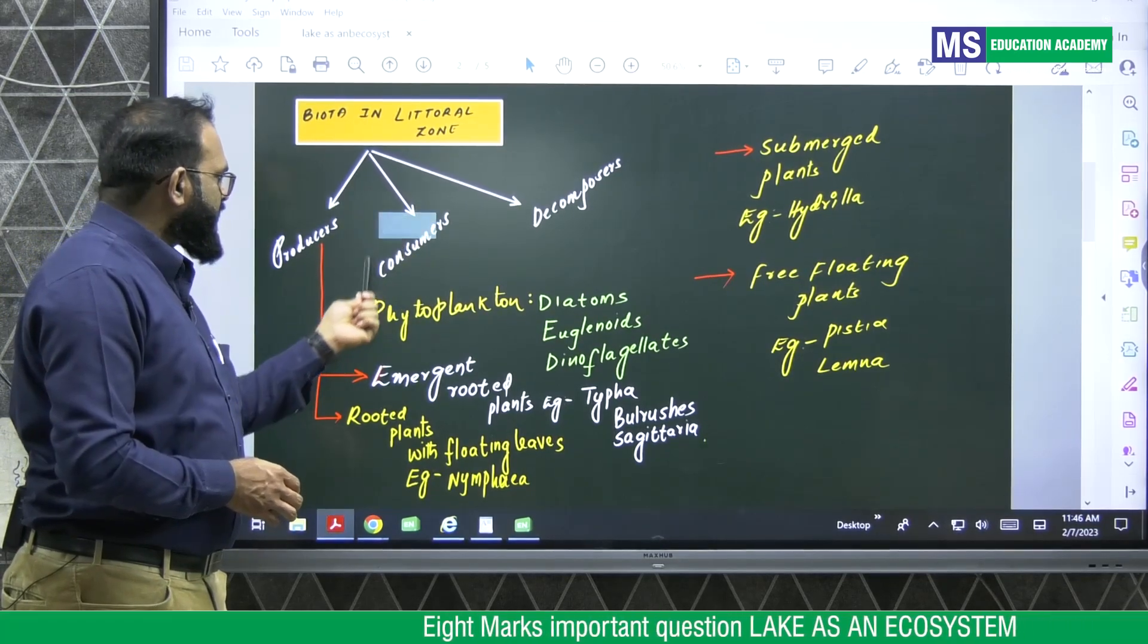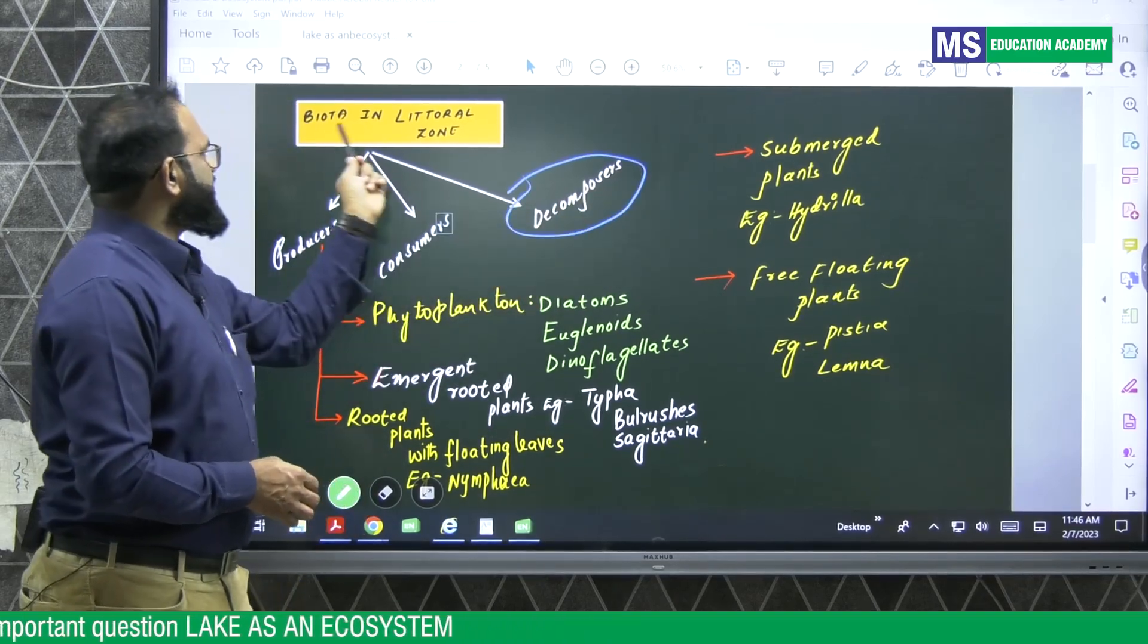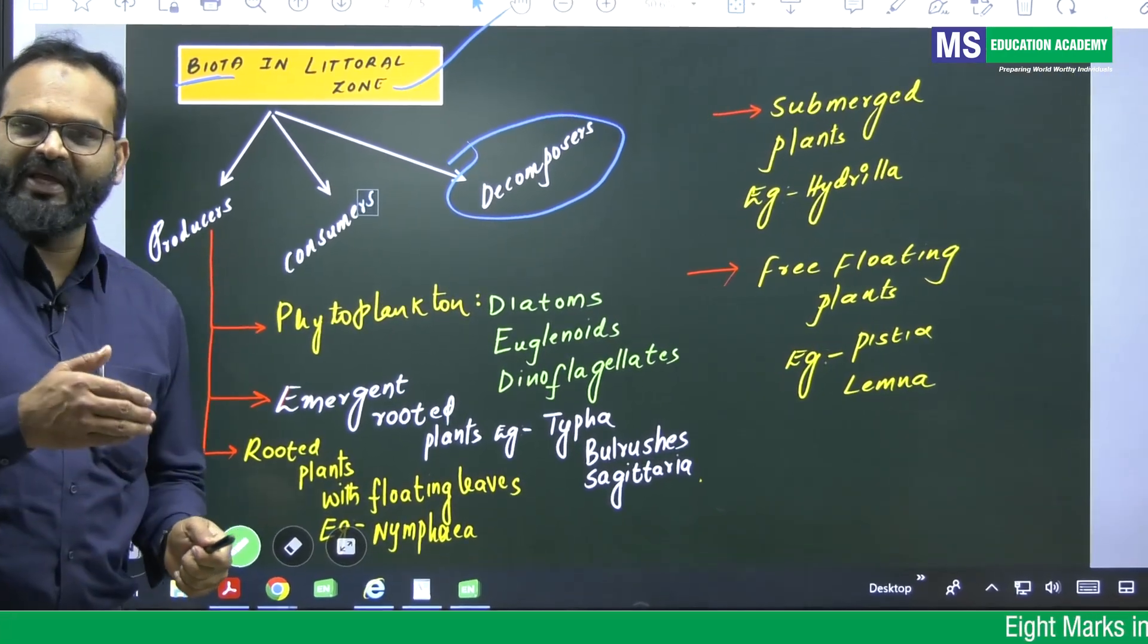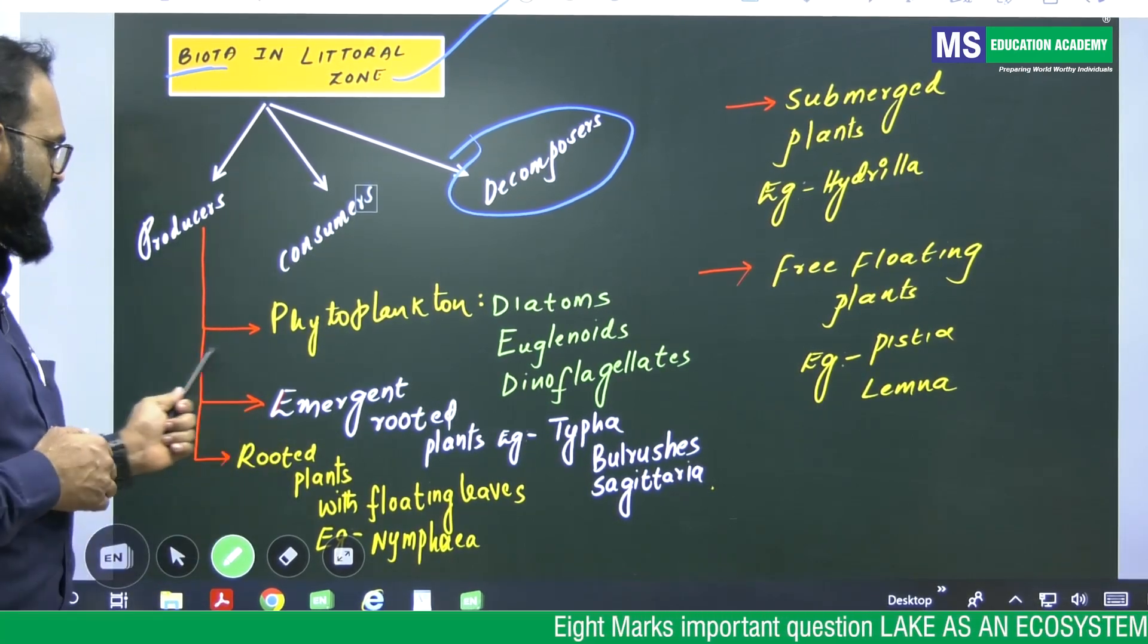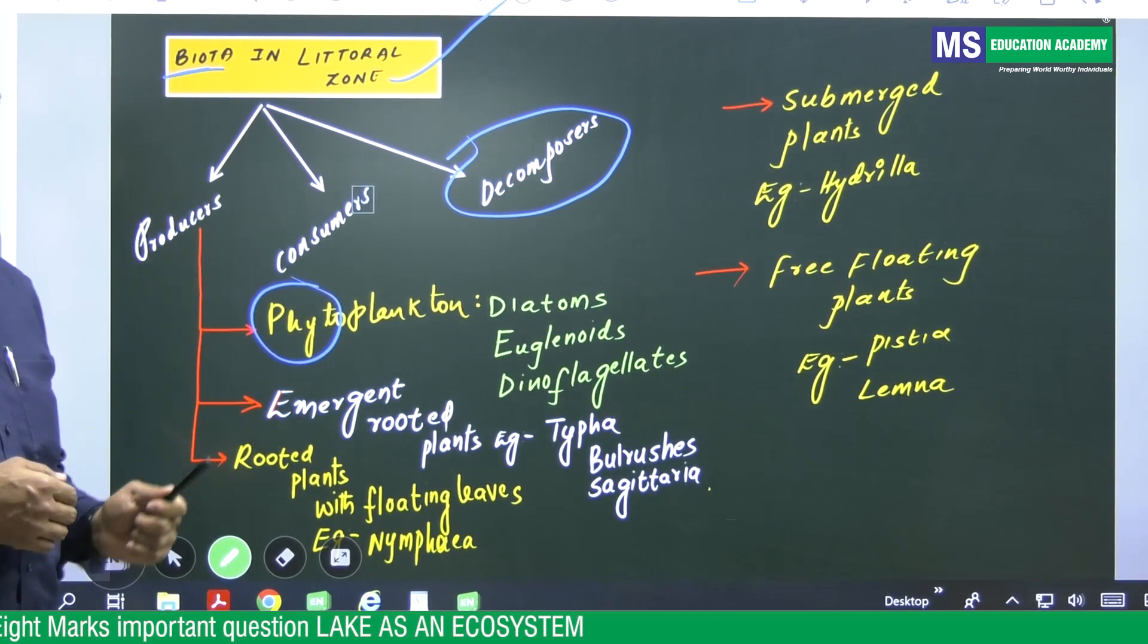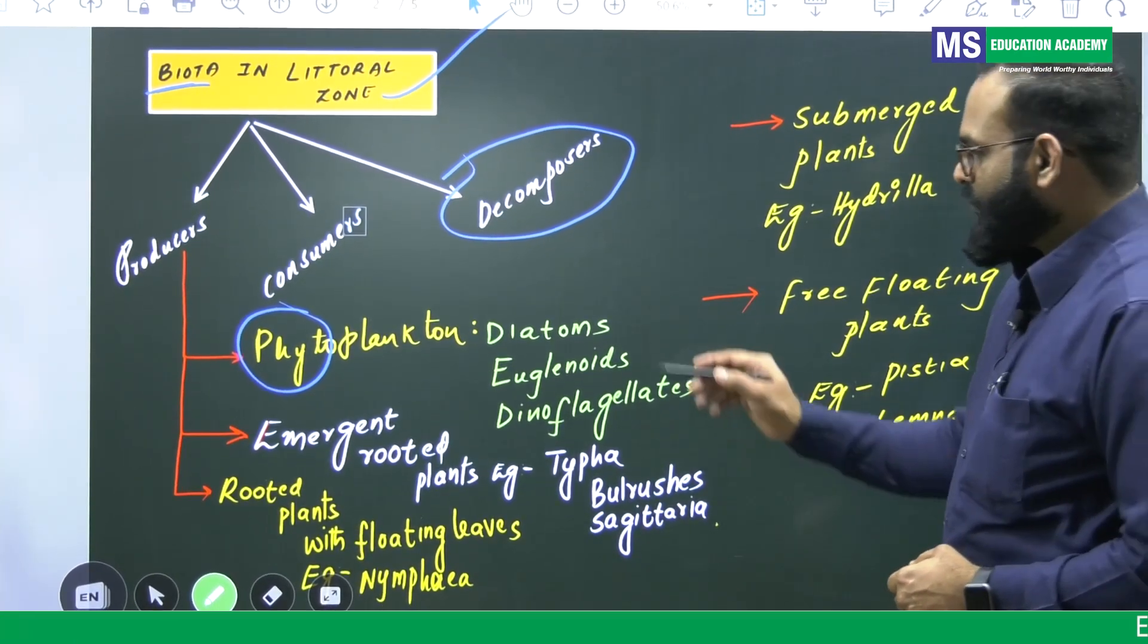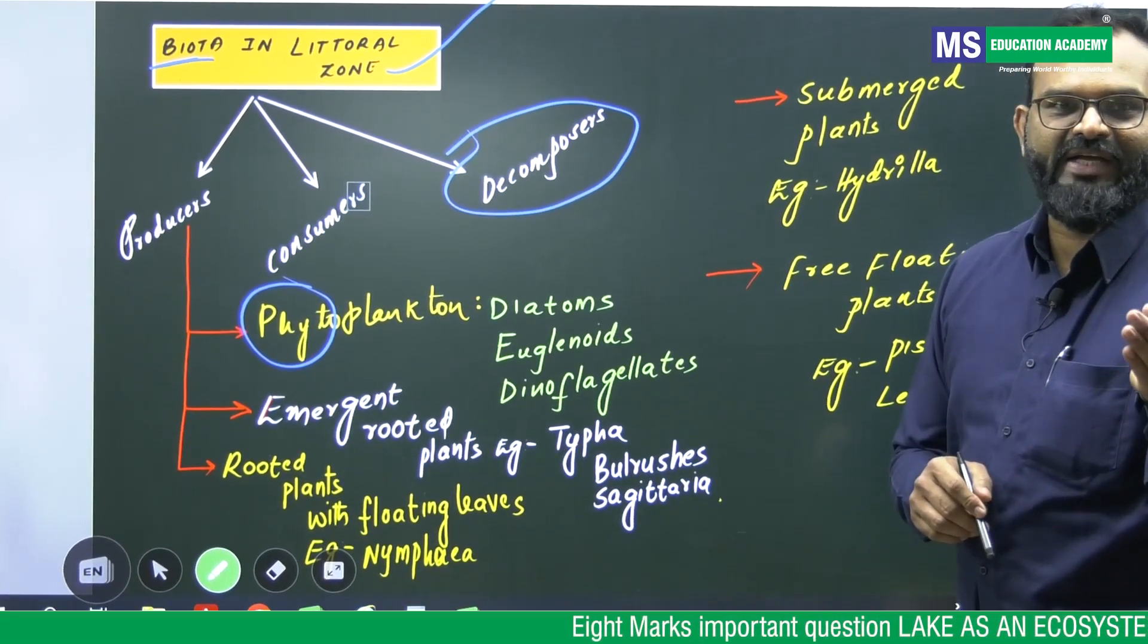It is 8 marks question students, producers, consumers and decomposers. So these are the living organisms seen in littoral zone. Producers as you know, which prepare the food materials by photosynthesis. These producers includes phytoplanktons and hydrophytes.